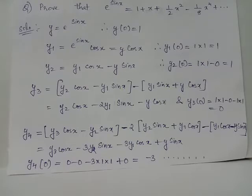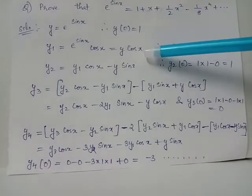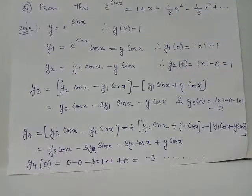y2 is the derivative of y1, obtained by application of the product rule to the term y cos x. After product rule application, y2 equals y1 cos x minus y sin x. The value of y2 at x equals 0 is y1(0) into cos 0 minus y(0) into sin 0, which is 1 into 1 minus 0, which is 1.